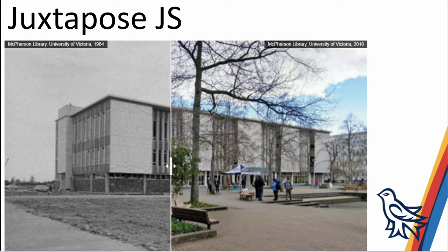The next tool is called Juxtapose, and it allows you to create then-and-now pictures. For example, this is the McPherson Library back when it was first built, and there's another picture of it today. You can drag a slider back and forth to look at what it looked like when it was built versus today, to get a sense of what changes have happened on campus. You'll often see this used with maps after natural disasters, where you can slide between before and after an earthquake or tsunami.